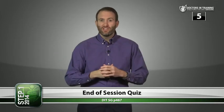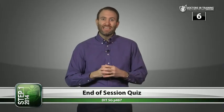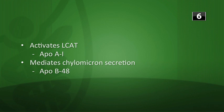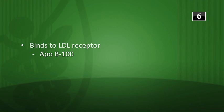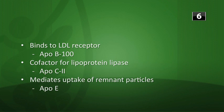End-of-session quiz: Familial hypercholesterolemia is caused by a deficiency of LDL receptors. Apolipoprotein matching: ApoA1 activates LCAT; ApoB48 mediates chylomicron secretion from the enterocyte; ApoB100 mediates VLDL secretion and binds the LDL receptor; ApoC2 is cofactor for lipoprotein lipase; ApoE mediates uptake of remnant particles.